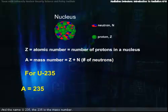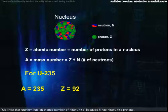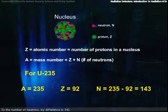In the name U-235, the 235 is the mass number. We know that uranium has an atomic number of 92 because it has 92 protons. So the number of neutrons by difference is 143.